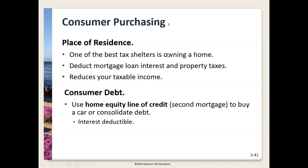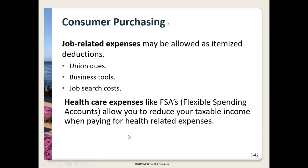One of the best tax shelters is owning a home, because you can deduct mortgage loan interest and property taxes as an itemized deduction. However, you used to be able to take out a home equity loan and deduct that interest as well — you can't do that anymore unless you use the money for your home. Job-related expenses are also no longer deductible as an itemized deduction, though they once were. Health care expenses allow you to reduce taxable income when paying for health-related expenses.